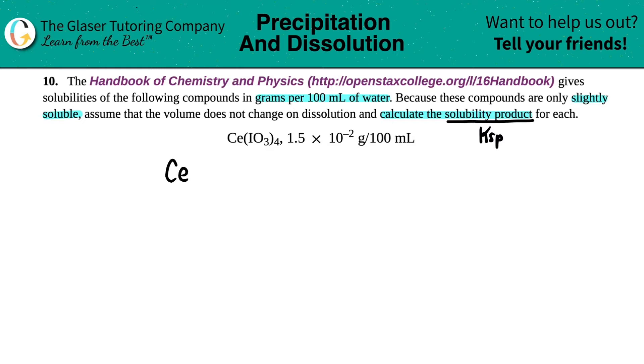So we have Ce(IO3)4. This is starting off as a solid, and at equilibrium, it's only going to break down into a little bit of its two ions. But it's going to do it, so we have to write the equation.